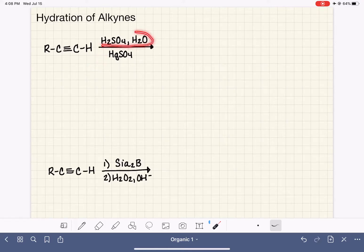So the reagents, this is not a two-step reaction. All at once, sulfuric acid, water, and mercury sulfate. This does a Markovnikov addition of the water molecule to the carbon-carbon triple bond.